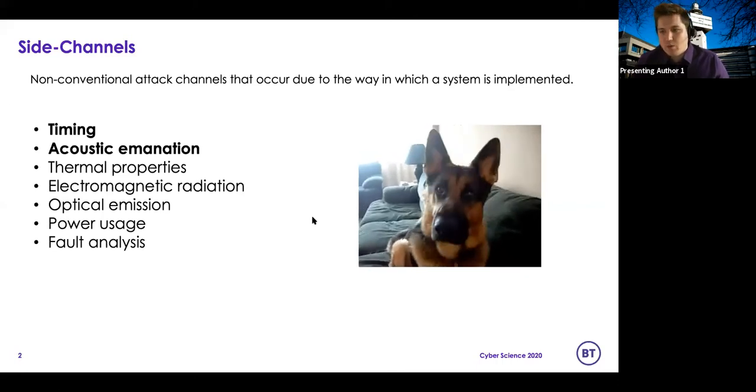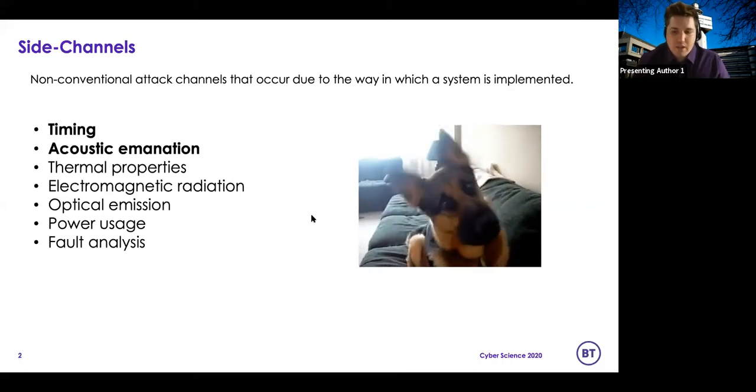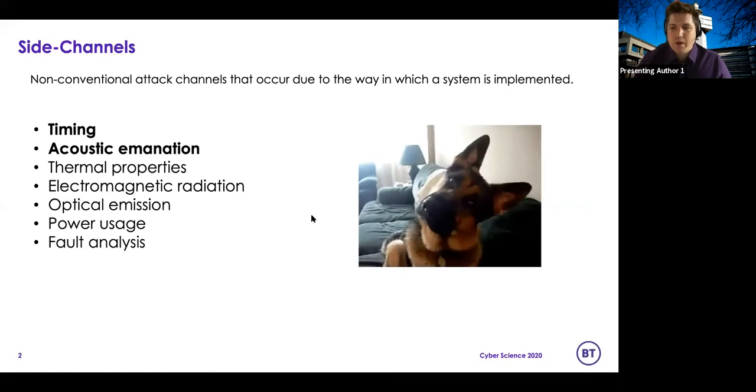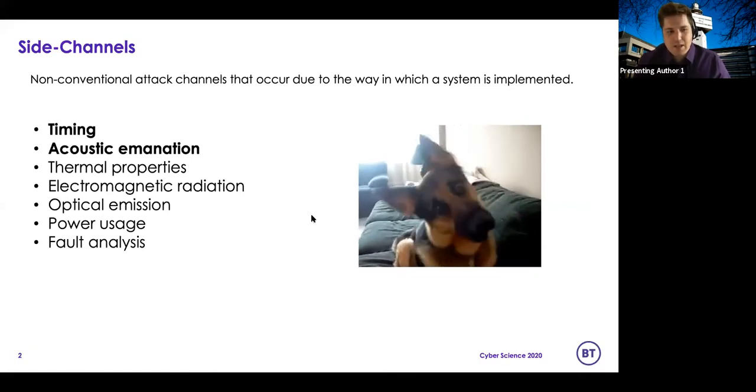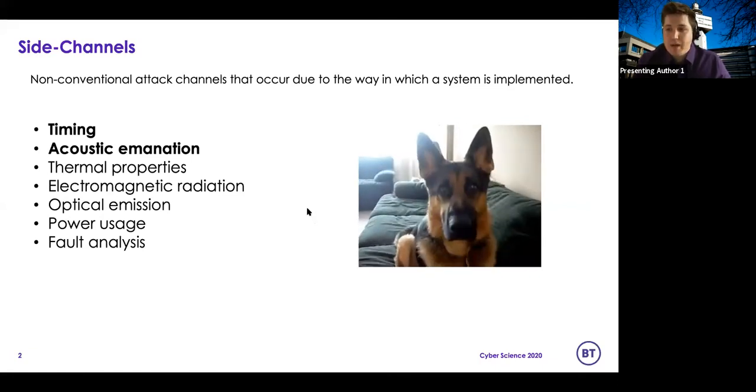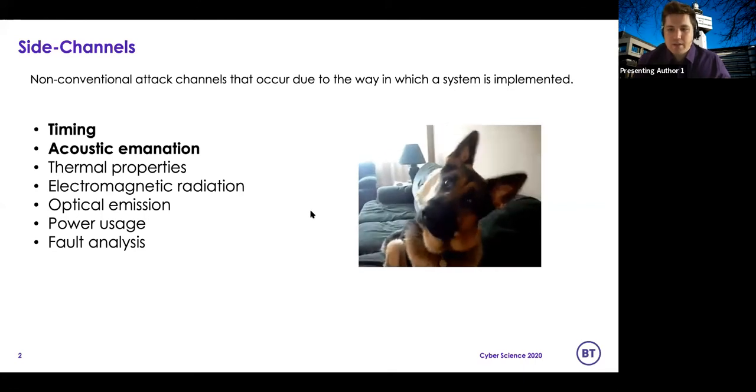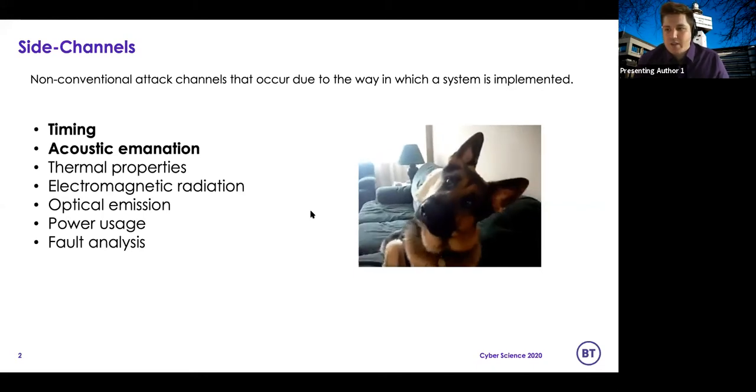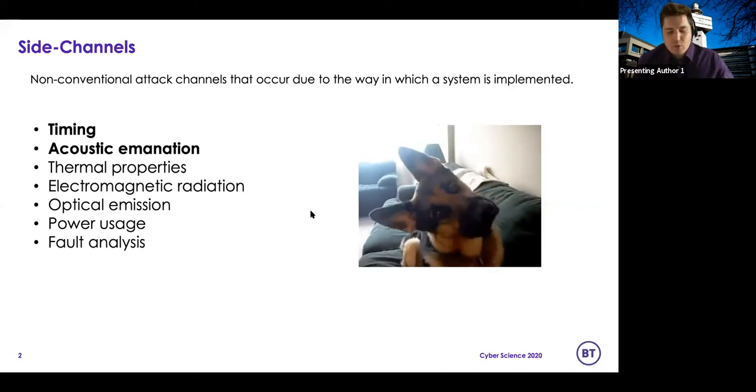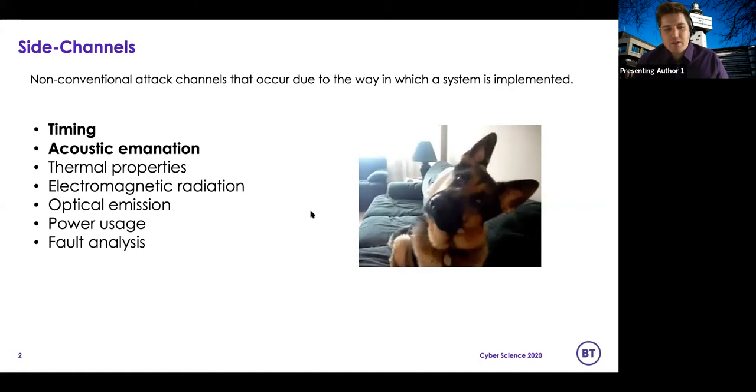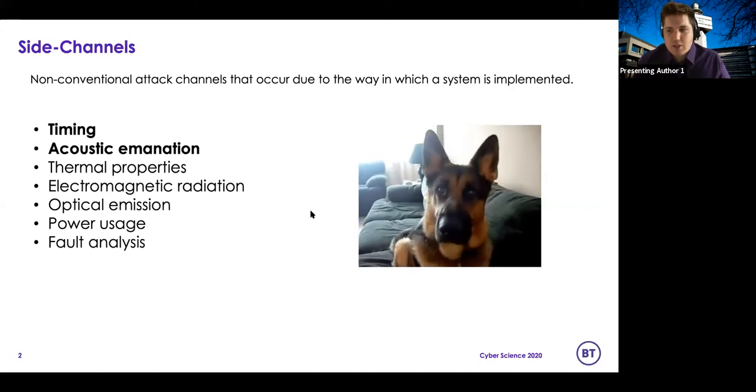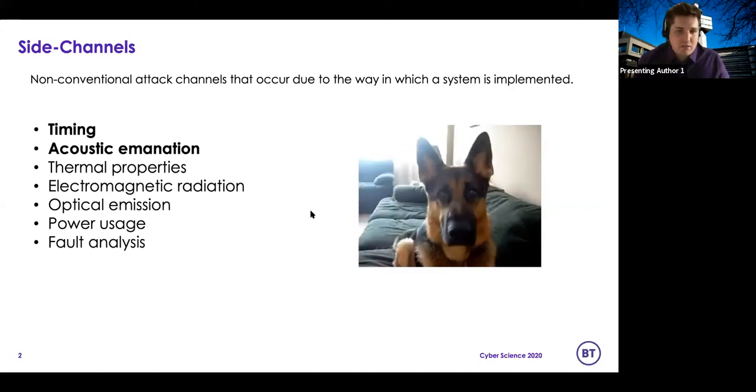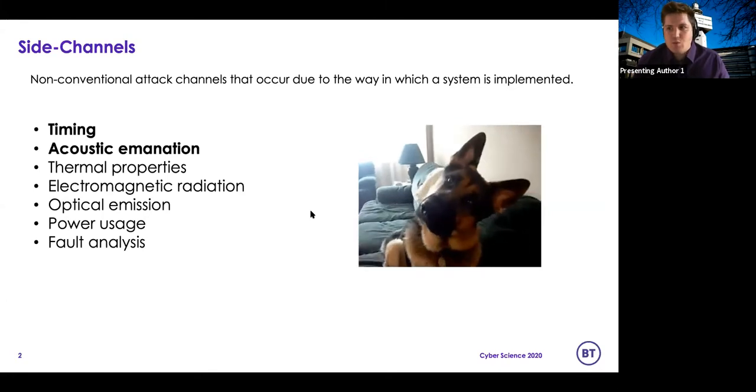Electromagnetic radiation is a very popular one. Being able to recover video signals that are being sent to a monitor by inspecting a cable. Being able to look at a microchip and the heat that's coming off in different locations to determine which sections of the microchip are being used. We're going to be focusing on timing and acoustic emanation—so the amount of time it takes to do something and the noise that's produced when you do it.